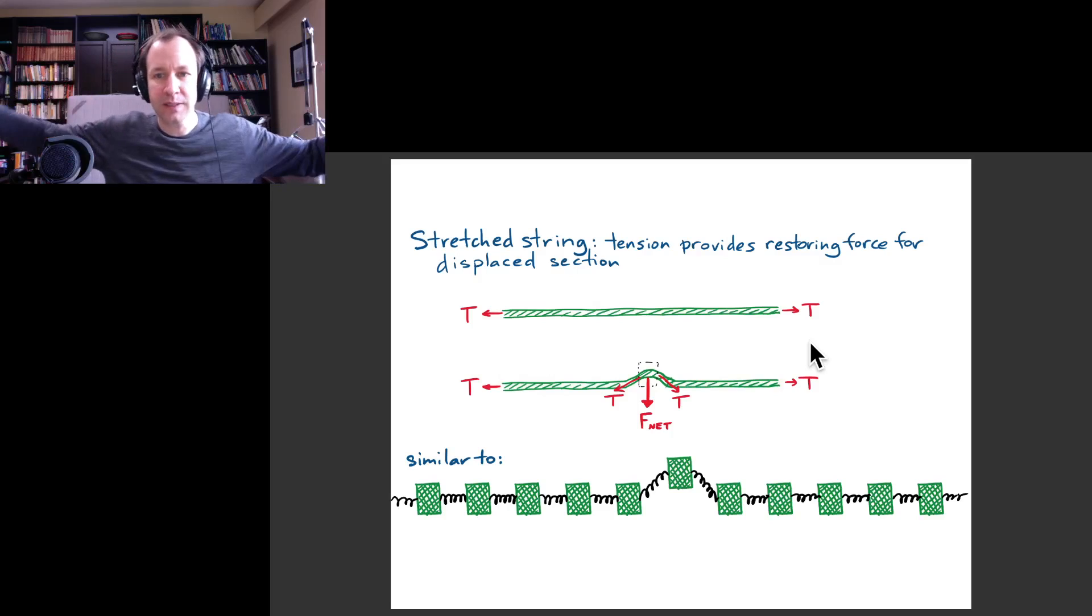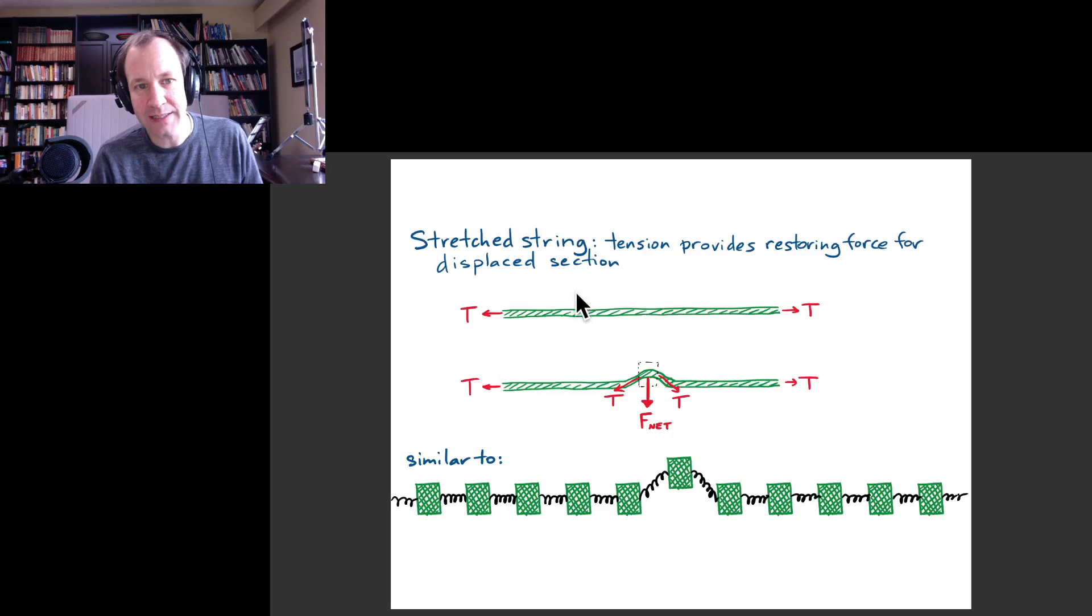You're pulling on both sides so that you have this tension force that is acting not only on the left and the right, but also at every point along the string. If I imagined dividing the string at some arbitrary point in the middle, then the right side would be pulling on the left and the left would be pulling on the right with that same tension force.